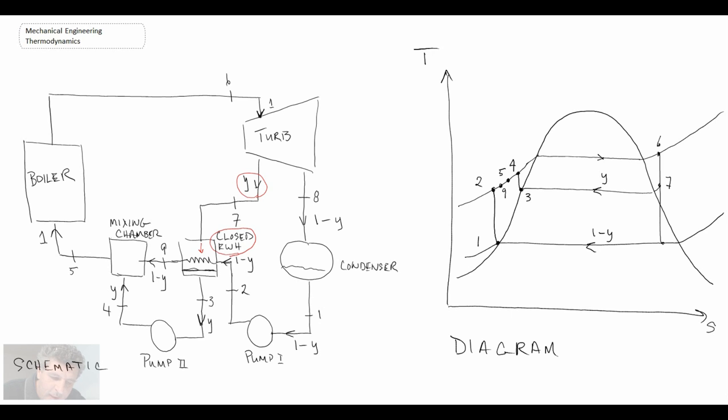So with that, the steam that is being stripped off on our TS diagram is at state seven. It comes down to state three, and in the process it's giving up thermal energy, enabling the fluid at state two, which is right here, to move up to state nine.